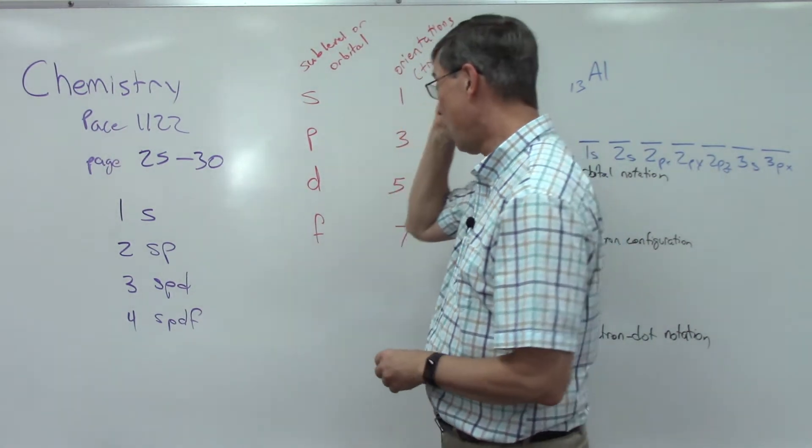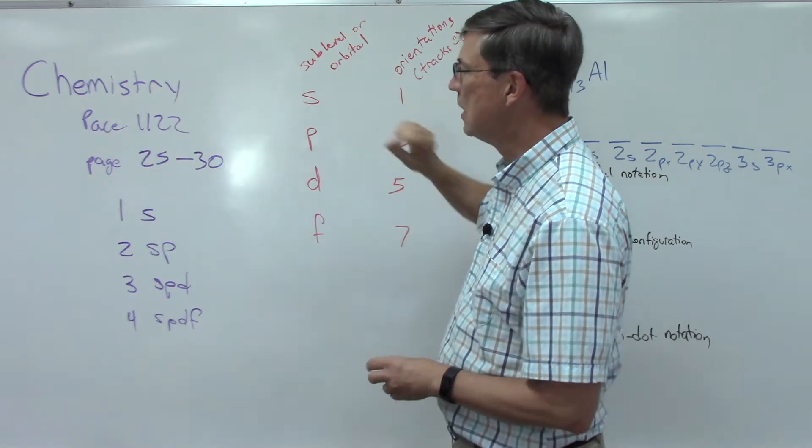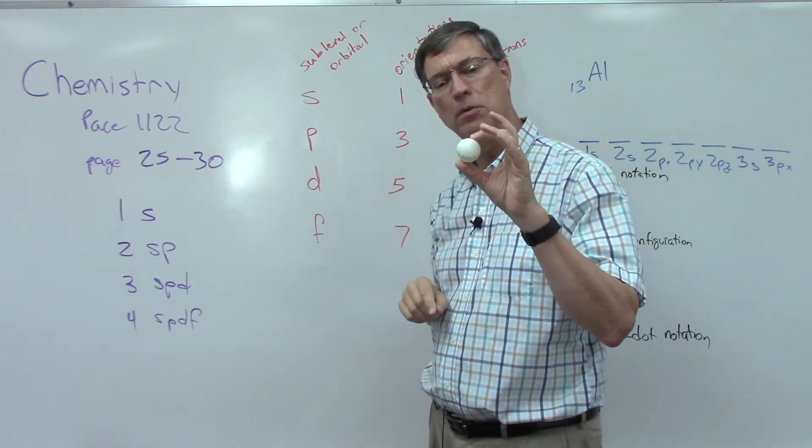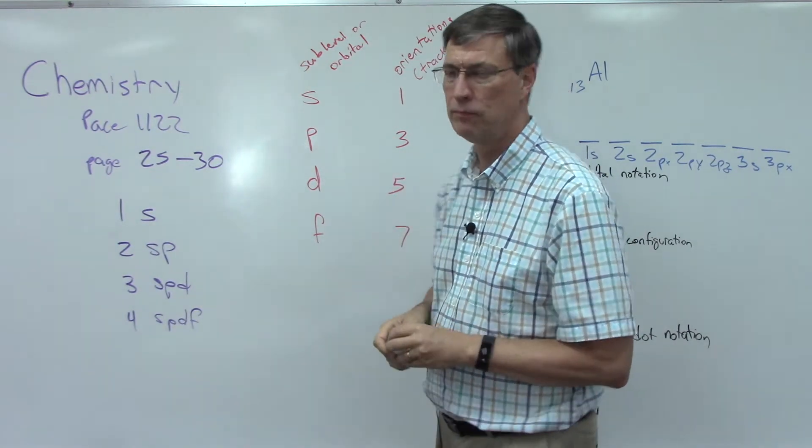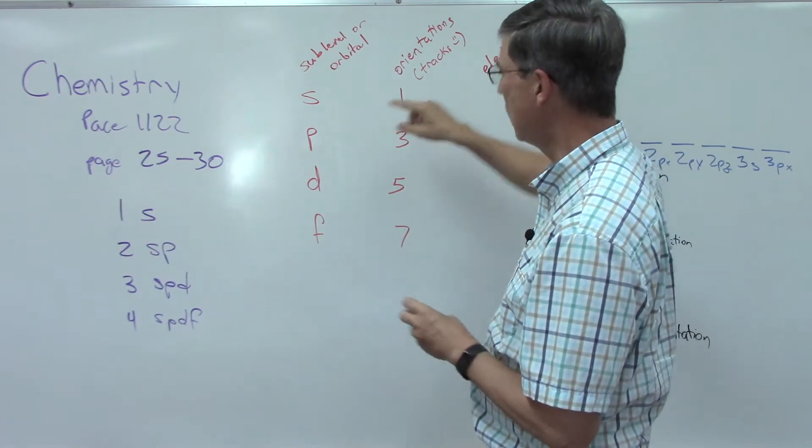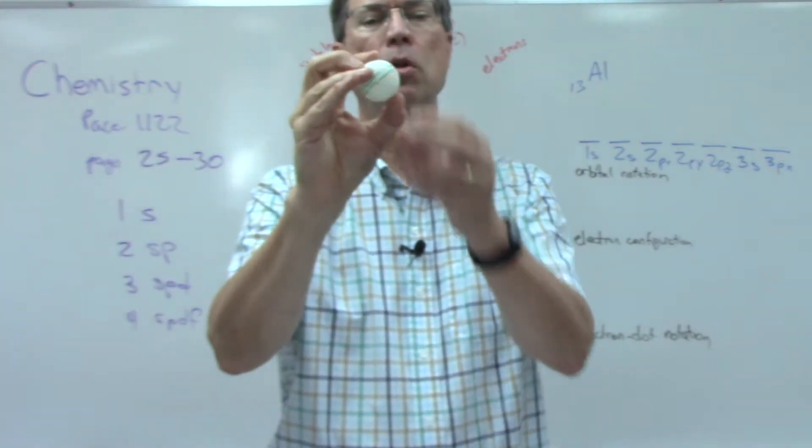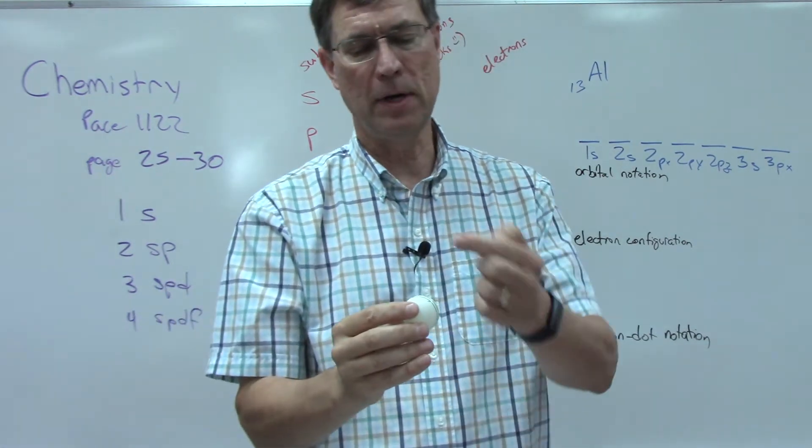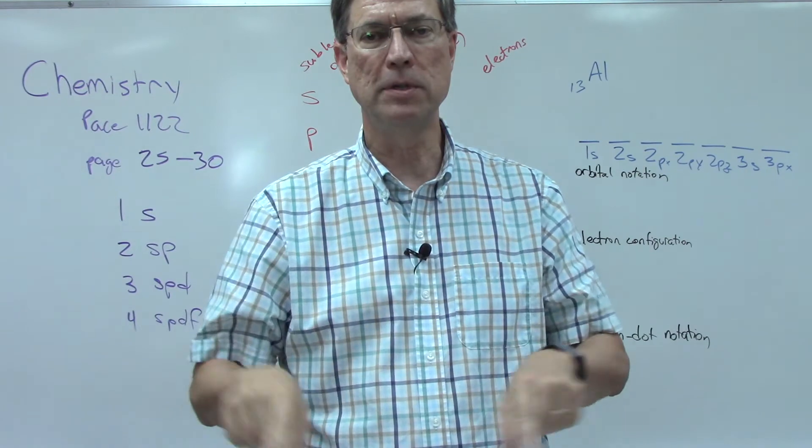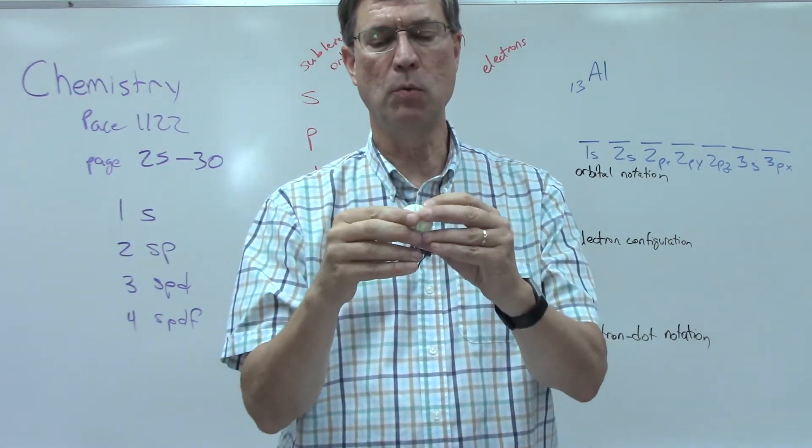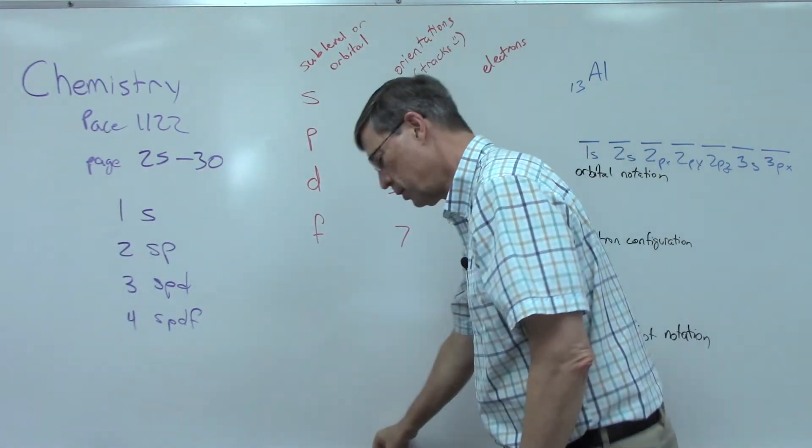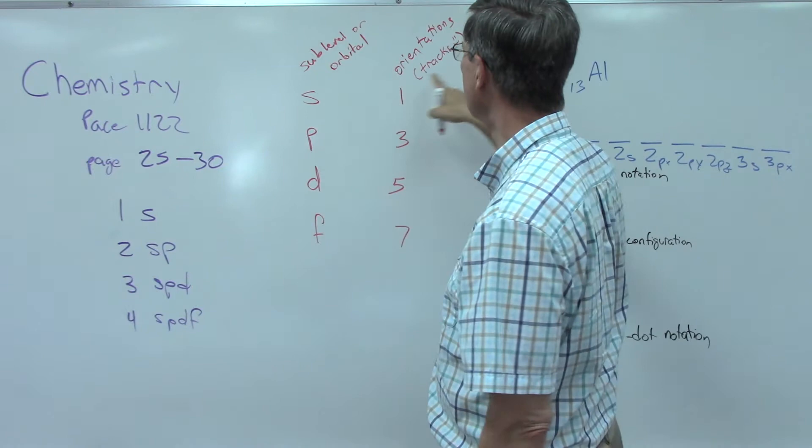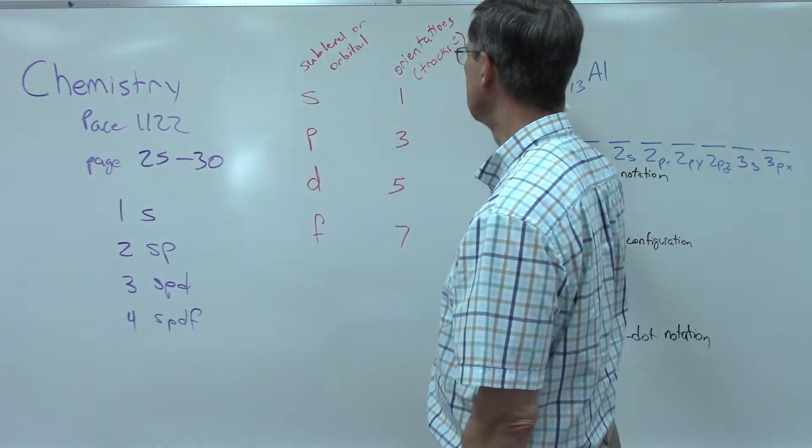So as we get to each energy level there are higher and higher capability of handling more and more electrons. The s orbital is round. I picture like a ping-pong ball, okay? And this is the first energy level. All it has is one s orbital. The s orbital has only one orientation. So it's kind of like a track. There's one arrow going this way and one arrow going this way. So these two electrons are going opposite directions. Two electrons per orientation.